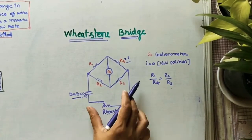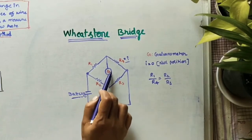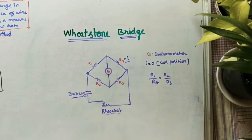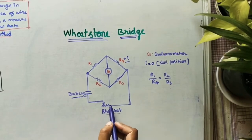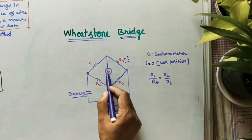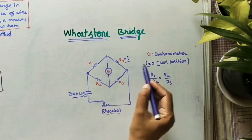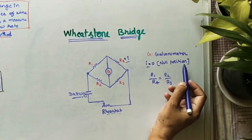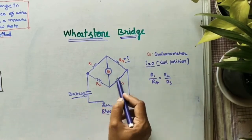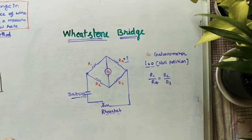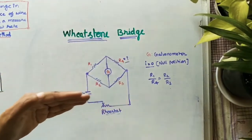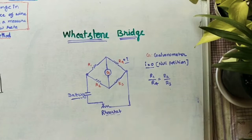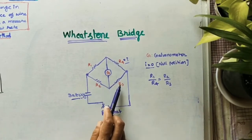Supply some current. The galvanometer G shows some current passing in the circuit. Adjust the rheostat so that the galvanometer current becomes zero — this is called the null position, or balanced condition. In balanced condition, the ratio of resistances on one side equals the ratio on the other: R1/R4 = R2/R3. Therefore R4 = R1 × R3 / R2. This is the main use of the Wheatstone bridge — finding the unknown resistance.